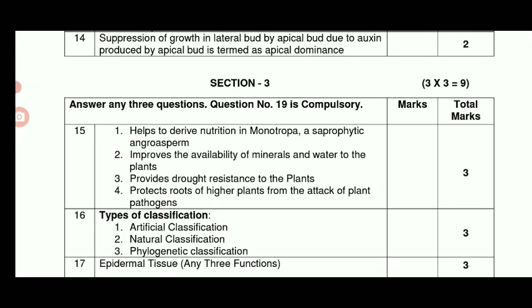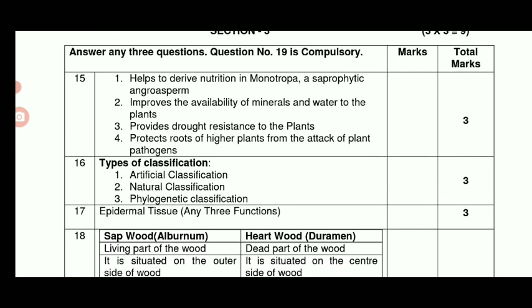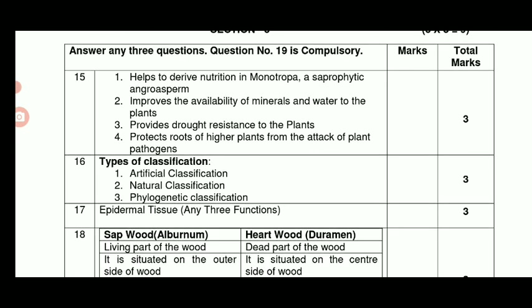Section 3: 3 questions, 1 compulsory. Mycorrhiza helps to derive nutrition in Monotropa (saprophytic angiosperm). It improves the availability of minerals and water to the plants, provides drought resistance to the plants, and protects roots of higher plants from attacking pathogens. Artificial classification, Natural classification, Phylogenetic classification — 3 marks.